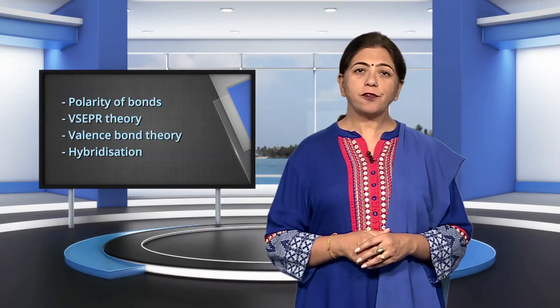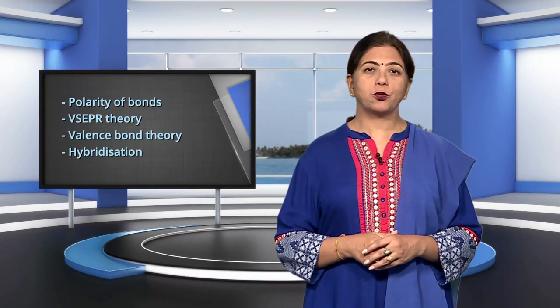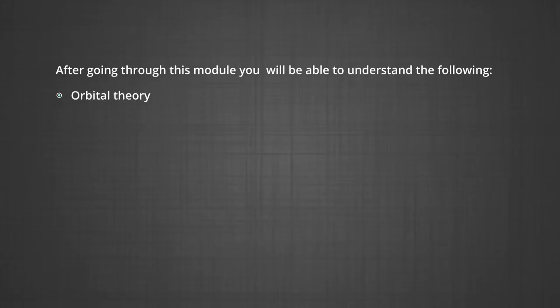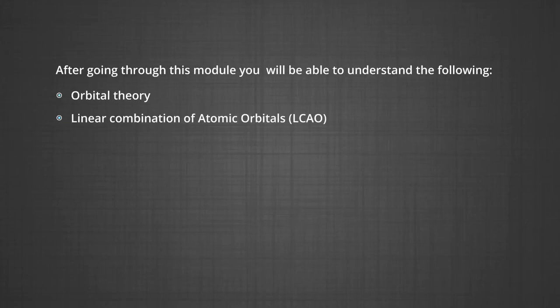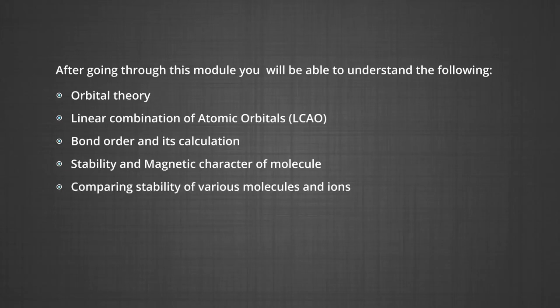Dear students, after going through this module, you will be able to understand the following: orbital theory, linear combination of atomic orbitals (LCAO), bond order and its calculation, stability and magnetic character of molecules, and comparing stability of various molecules and ions.